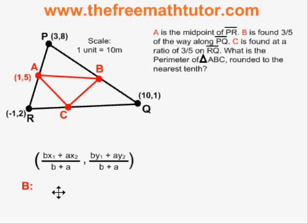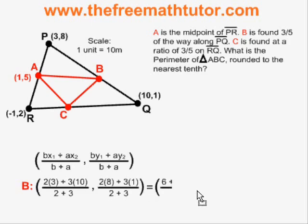Using those values and the coordinates of points P and Q, I fill in my ratio formula. Simplifying, I find that point B has an x-coordinate of 36/5 and a y-coordinate of 19/5. I label my drawing.